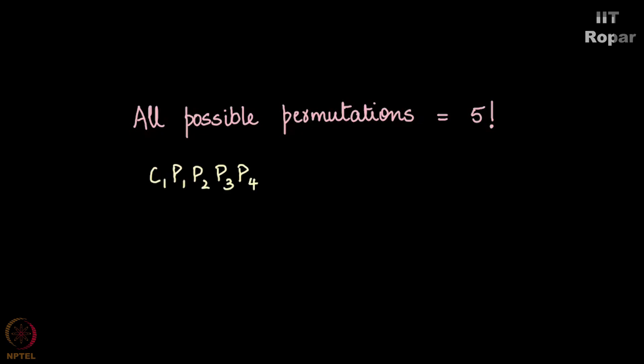Let us understand what we are over counting actually. Observe this: C1, P1, P2, P3, P4. Don't you think it is the same as P4, C1, P1, P2, P3? Please observe very carefully. How is it the same?